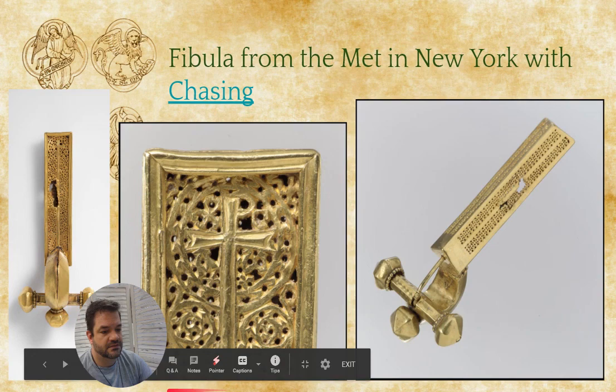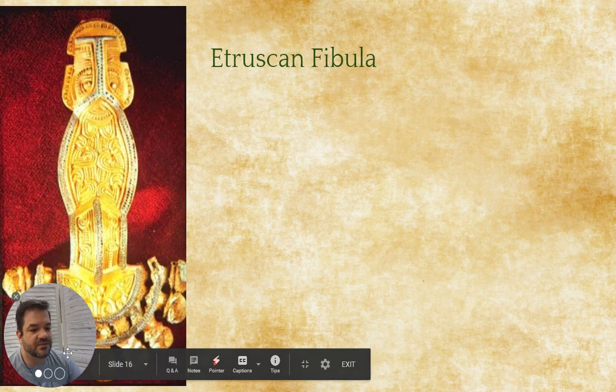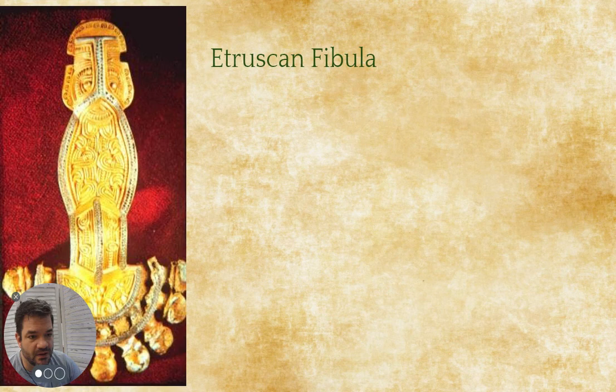Here is an Etruscan fibula — you can see the form it's taking. Notice the metalwork: richly decorated with patterning.